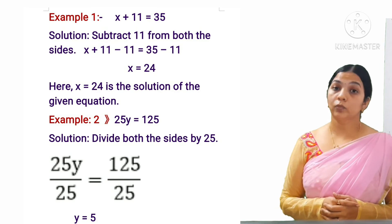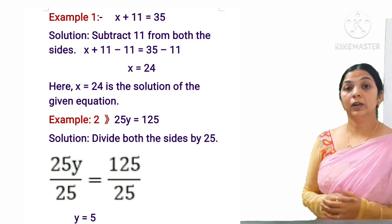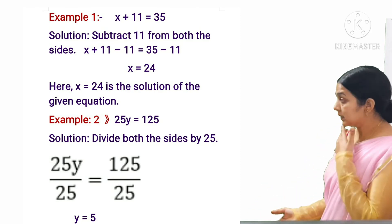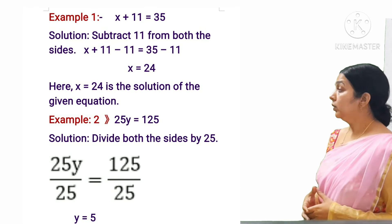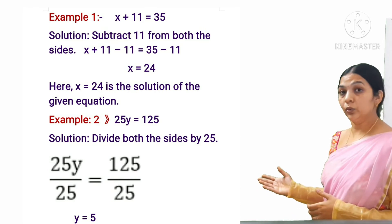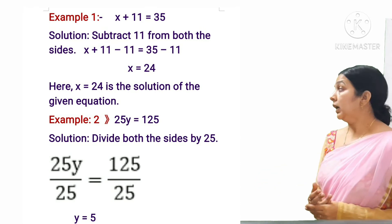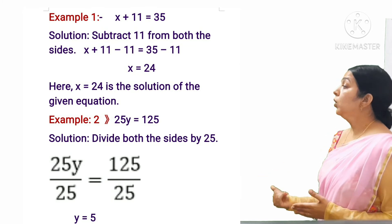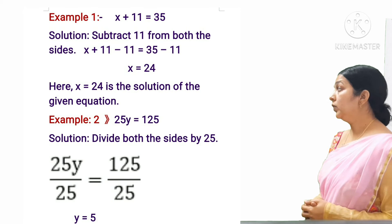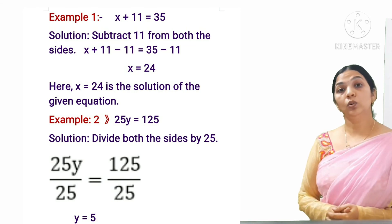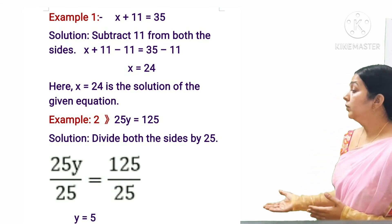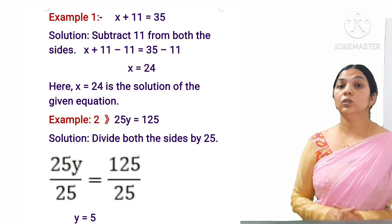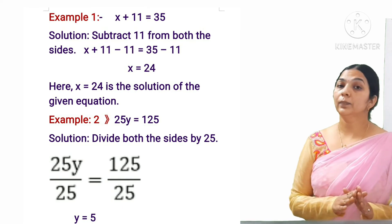Similarly, for the equation 25y = 125, if we divide both sides by 25, we get y = 5. So y = 5 is the solution, and this value satisfies the equation.